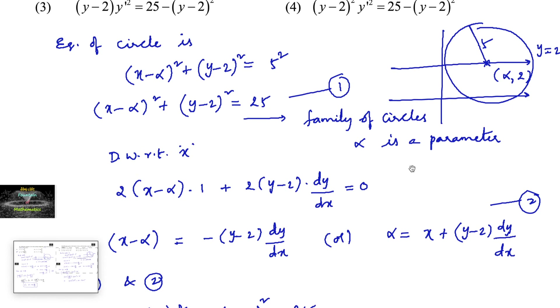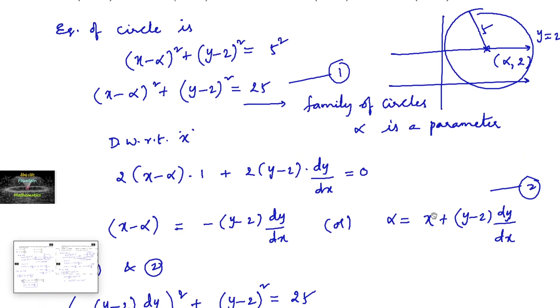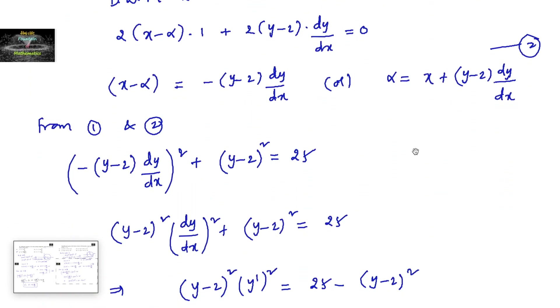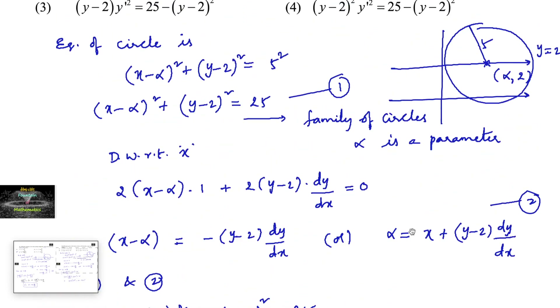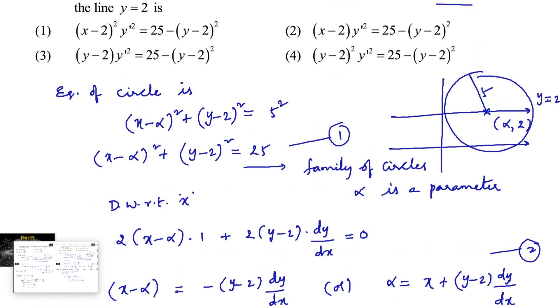(y − 2)²·(y')² = 25 − (y − 2)² is the answer — it's option D, the fourth option.